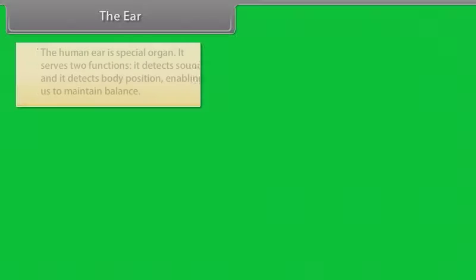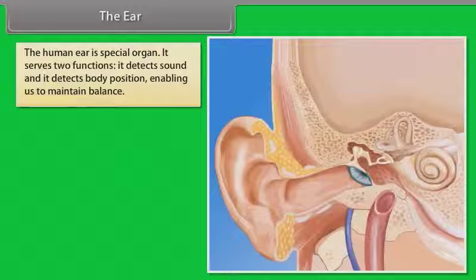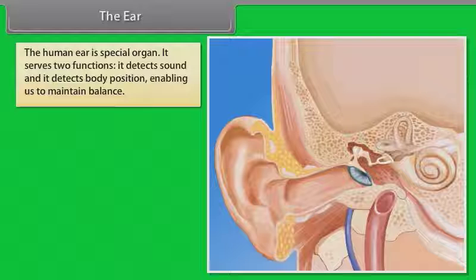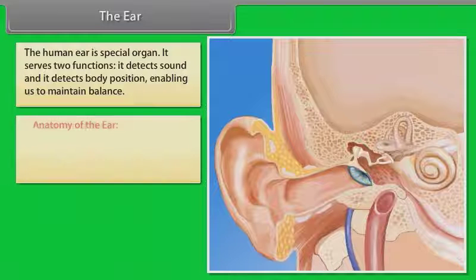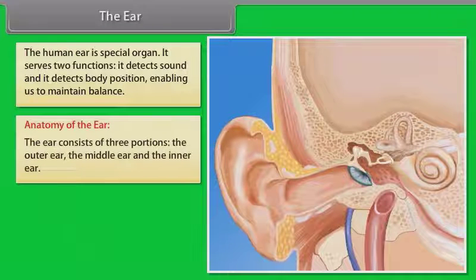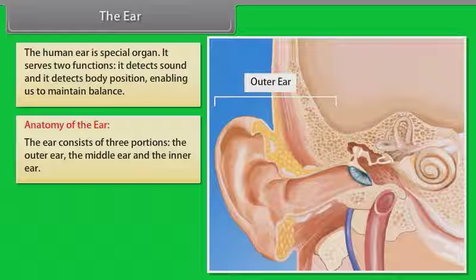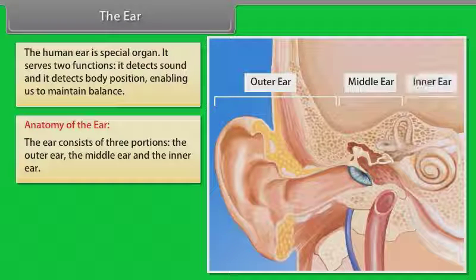The human ear is a special organ that serves two functions: it detects sound and it detects body position, enabling us to maintain balance. The ear consists of three portions: the outer ear, the middle ear and the inner ear.